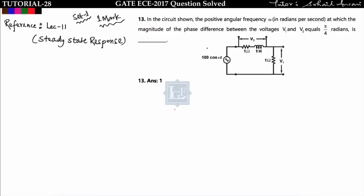In the circuit, find the positive angular frequency omega at which the magnitude of phase difference between voltages V1 and V2 equals pi by 4. So we have to find the frequency. The angle between V1 and V2 is given as pi by 4, and we need to find the angular frequency of the input voltage source.